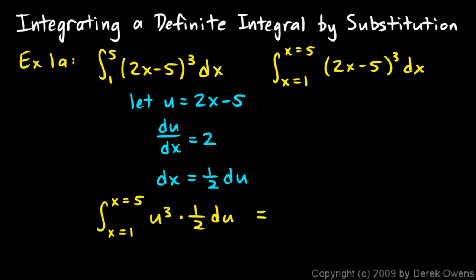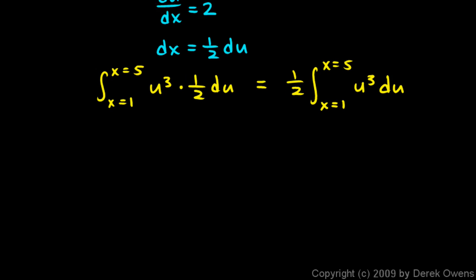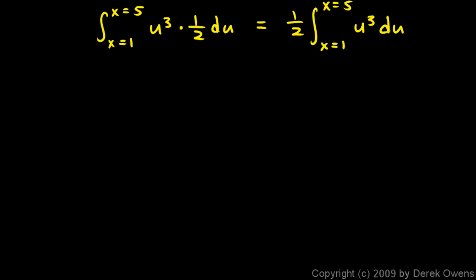Let's rearrange that a little bit. Let's just put the 1 half out front, and that's a step you could probably do in your head. 1 half times the integral from x equals 1 to x equals 5 of u cubed du. And that's not too hard to integrate. I'll scroll down here, have a little bit more room.